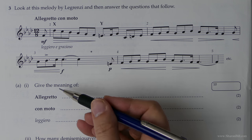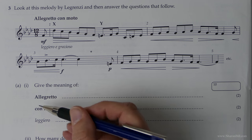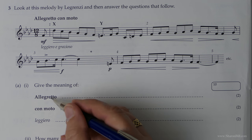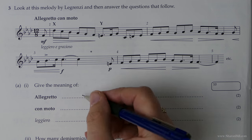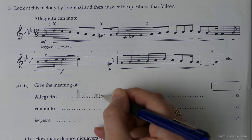So it asks us to give the meaning of allegretto. Well allegro means fast or quick. Allegretto means fairly quick.